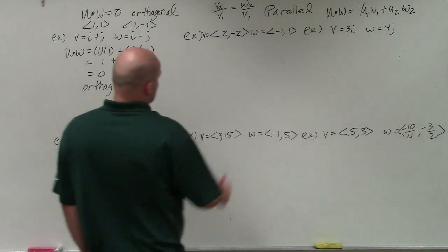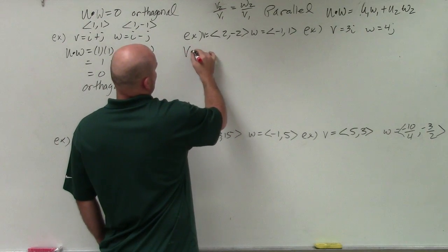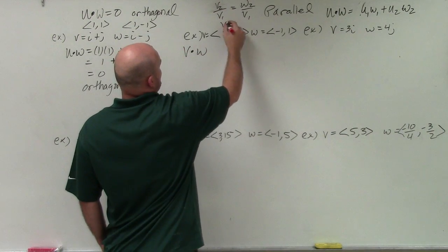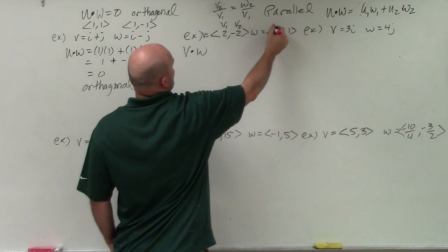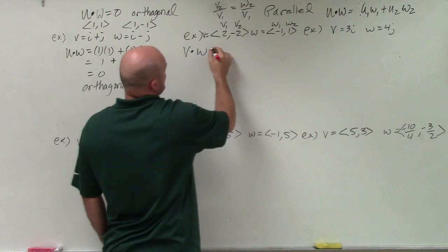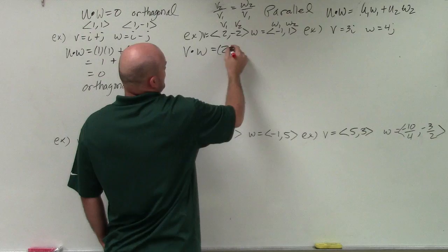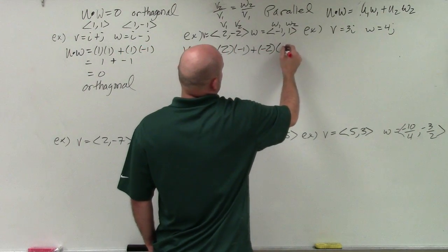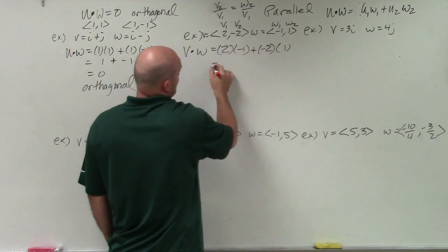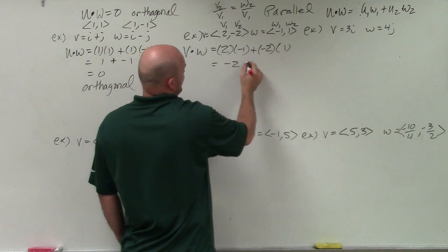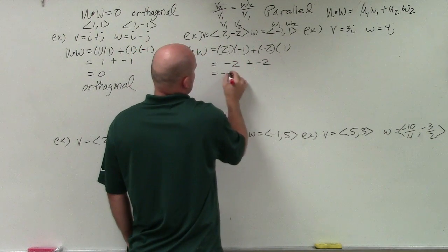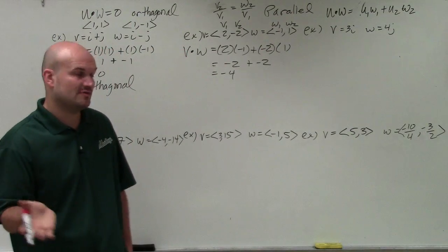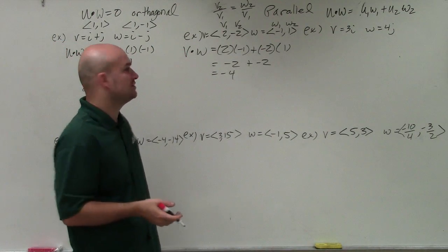Next one. Let's do the dot product of v dot w. This is already in component form. So you can see that's v1, that's v2, that's w1, that's w2. We have 2 times negative 1 plus negative 2 times positive 1. So in this case, I get negative 2 plus negative 2, which equals negative 4. So it's not orthogonal.